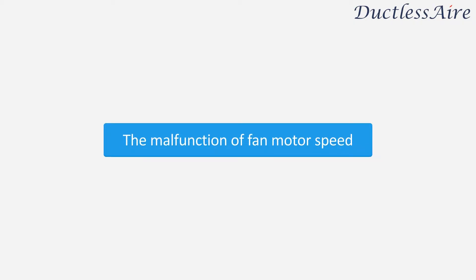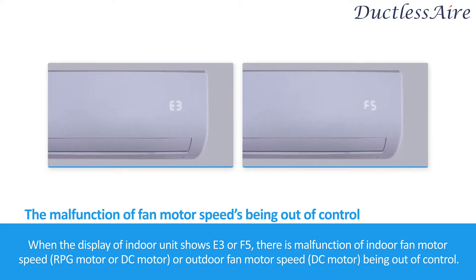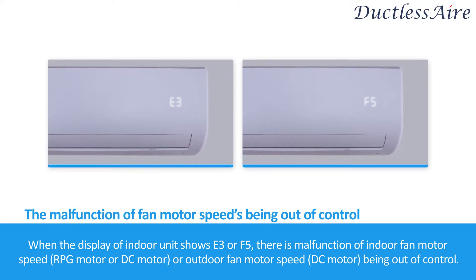The malfunction of fan motor speed. When the display of the indoor unit shows E3 or F5, there is a malfunction of indoor fan motor speed — RPG motor or DC motor — or outdoor fan motor speed, DC motor being out of control.